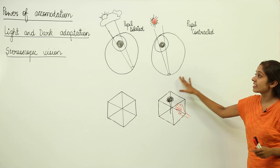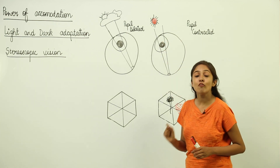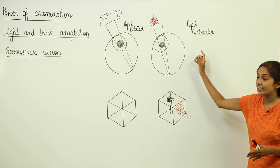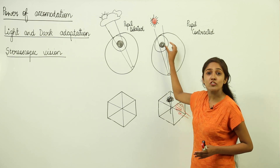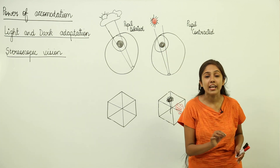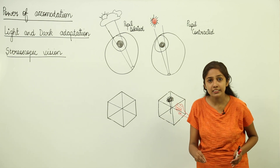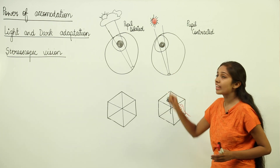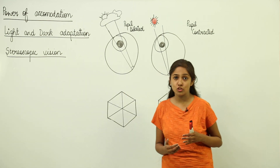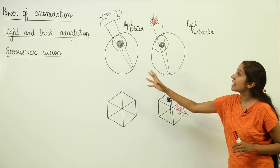Now look at dark adaptation. When you go from a darker room to a brighter room, your pupil is going to get contracted — the size of the pupil is reduced. This contraction is for the protection of your eyes, so that less light enters and prevents any damage, because if brighter light enters directly it can damage the sensitive organ that is your eye.